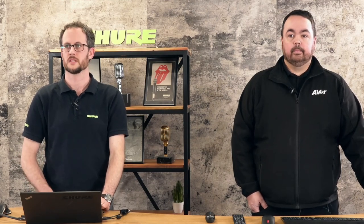Let's have a quick refresher of the system components, then we'll show you how quickly you can add a new preset. Microphone-wise, we're using the MXA910 mounted in the ceiling, communicating over Dante to the P300, then into our Teams PC. For the camera we've got the Ava PTZ 310. Now we'll set up the PTZ link software and get it all communicating together.